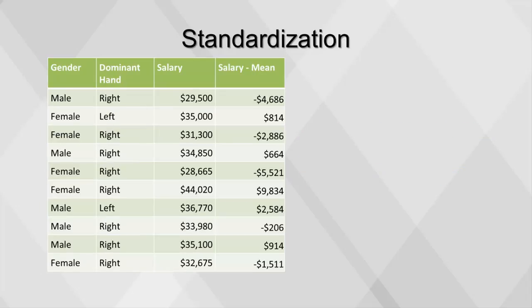Mean and standard deviation are measures that describe the distribution of a set of numbers. But what if we want to describe the numbers within the set to compare to numbers within an entirely different set? We can do this by standardizing the values. In statistics, this measure is called the z-score. To standardize a value, subtract the mean and divide by the standard deviation.